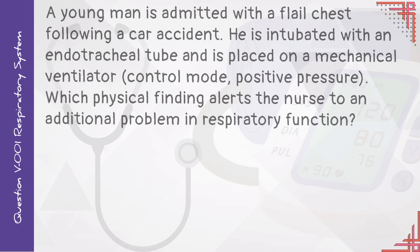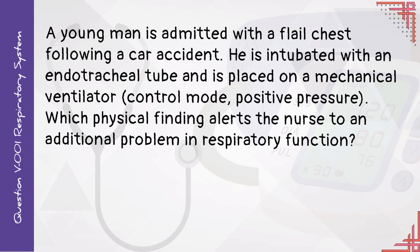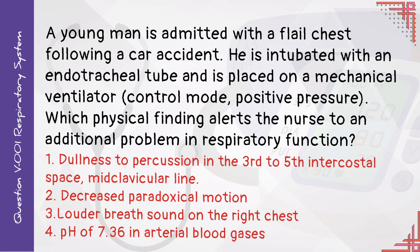A young man is admitted with a flail chest following a car accident. He is intubated with an endotracheal tube and placed on a mechanical ventilator in control mode with positive pressure. Which physical finding alerts the nurse to an additional problem in respiratory function? One: dullness on percussion in the third to fifth intercostal space at the midclavicular line. Two: decreased paradoxical motion. Three: louder breath sounds on the right side of the chest. Four: pH of 7.36 on arterial blood gases.